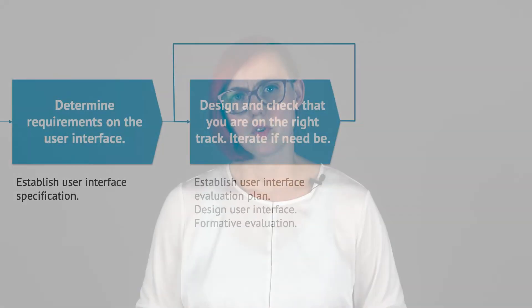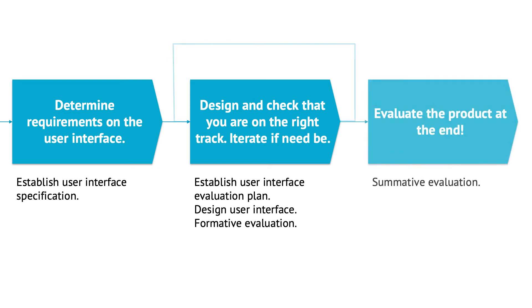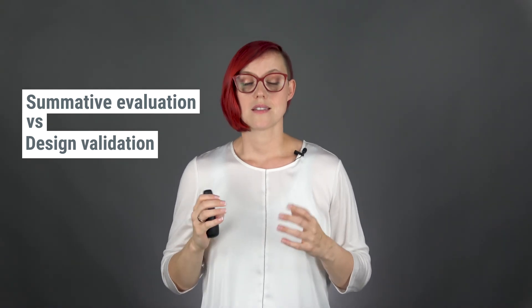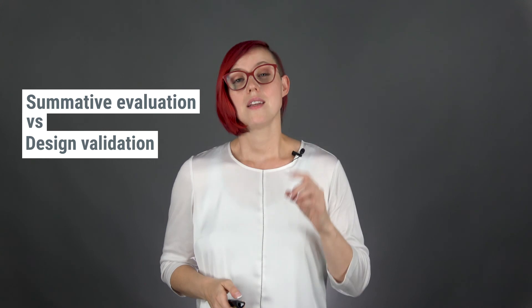If you find you are not on track, you need to iterate on the design and improve. You proceed until your last formative test shows nothing more to improve. After implementing the user interface according to requirements and evaluating it along the way, it's time for the final summative evaluation. The summative evaluation demonstrates that the user does not end up in a situation with unacceptable risk as a result of poor usability. Note that it is not the same as design validation — design validation shows user needs have been met, while summative evaluation shows the user interface is safe.